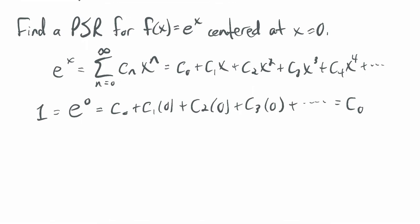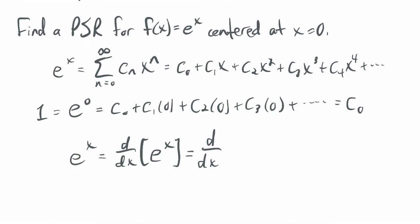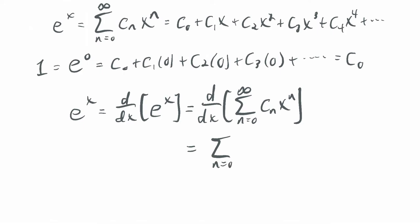The other thing we need is the derivative of this function and power series, because the derivative of e to the x is e to the x. So e to the x equals d/dx of e to the x, which is the derivative of the power series. We'll do the term-by-term derivative: the series n goes from 0 to infinity of c sub n times n times x to the n minus 1.